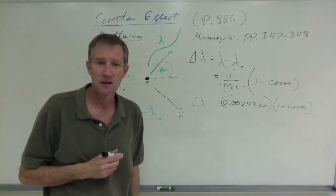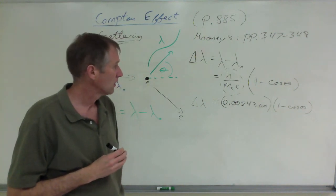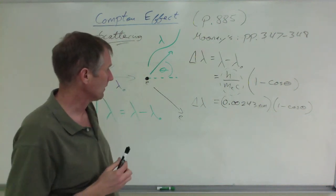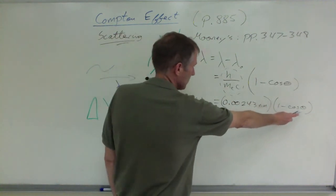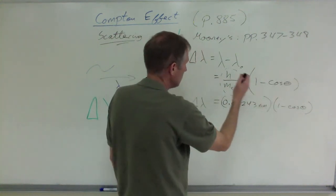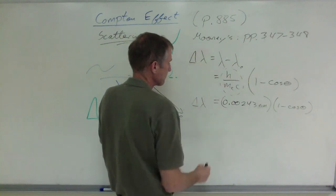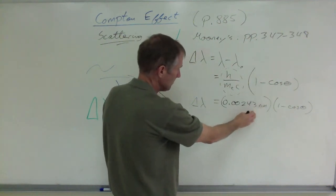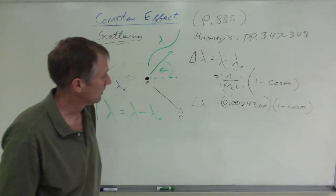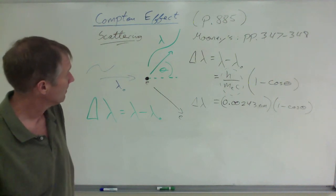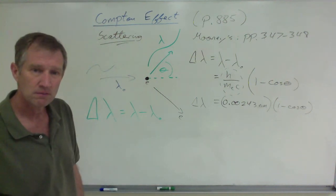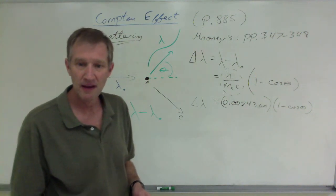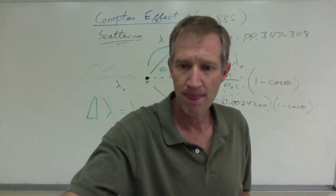I have seen it, like I said, in multiple choice questions. So depending on what you're asked for, the only variable here, again, is that one right there, the angle. You've got the two wavelengths, and this is a constant. All this is given in the textbook. Further proof of the particle nature of light. That's that.